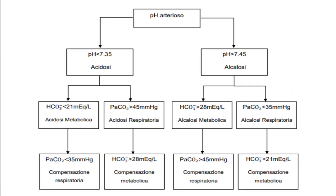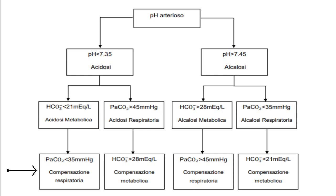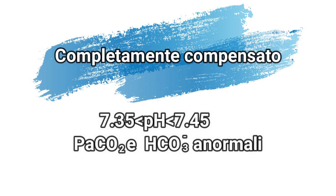Il seguente diagramma può essere utile nell'interpretazione dell'emogasanalisi arteriosa. Partendo dal pH arterioso, possiamo determinare una situazione di acidosi o alcalosi. A questo punto i valori di HCO3- e PaCO2 ci indicano se la causa è metabolica oppure respiratoria. Se i meccanismi di compensazione funzionano, PaCO2 e HCO3- varieranno nella stessa direzione rispetto allo squilibrio iniziale. Quando il pH è normale ma i valori di PaCO2 e HCO3- sono anormali, lo squilibrio acido-base è stato completamente compensato.